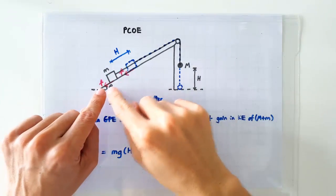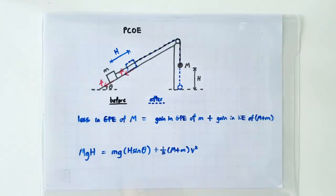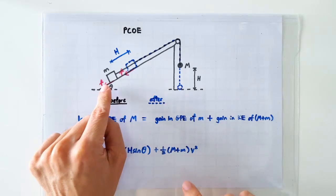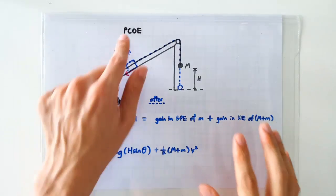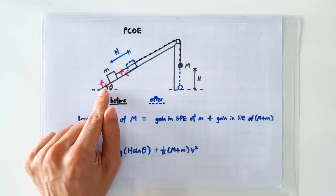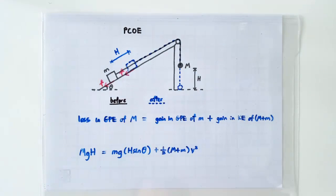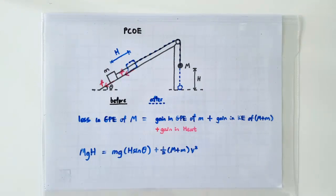Now, what if the ramp is not smooth at all, such that there's a constant frictional force acting on the wooden block? Can we still apply PCOE, since the frictional force is an external force that will have done negative work and decrease the total energy in this system?